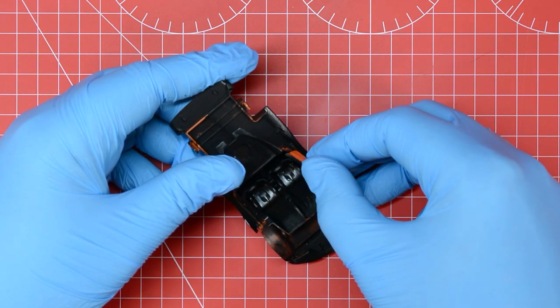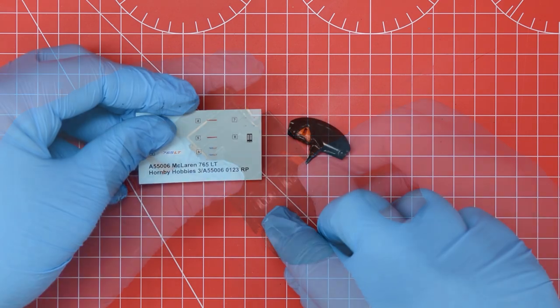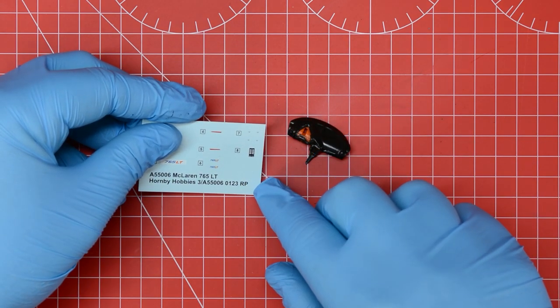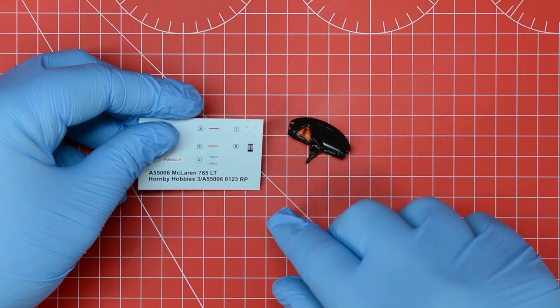With the interior assembly well underway we then run into the first of our required markings. This small transfer is required on the centre console of the dashboard.